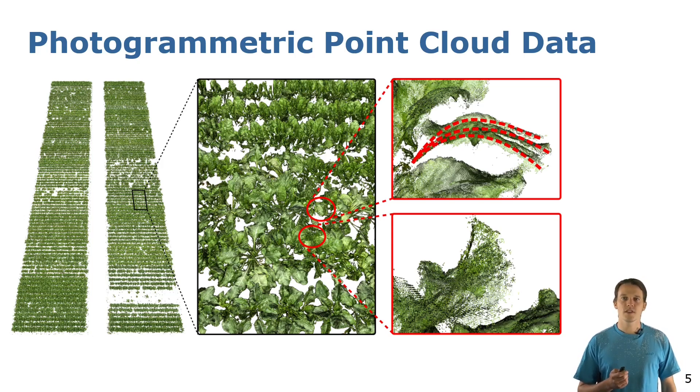The segmentation process is however quite challenging due to different noise types that can be seen here in the red boxes on the right. The temperature deformation of the leaves leads to multiple instances of the same leaf, as you can see in the top right, and wind influence creates these stray points you can see here on the bottom right. This leads actually to many segmentation errors when using current state-of-the-art methods.